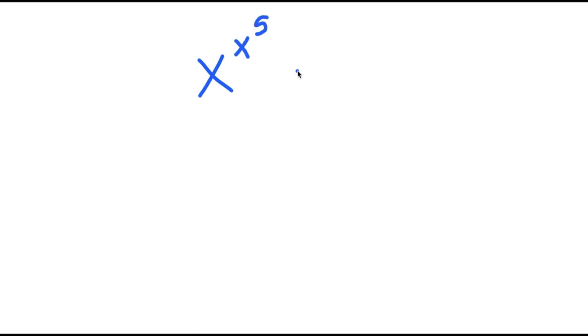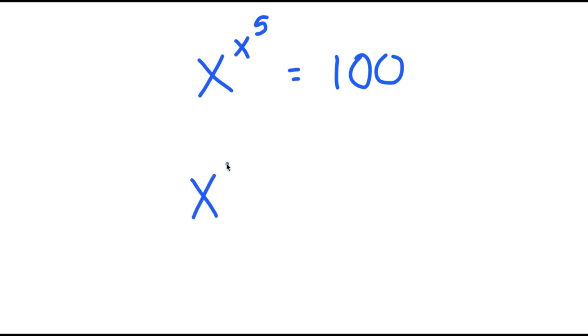So in this video, I'm going to solve the equation x to the power of x to the power of 5 is equal to 100. To solve this, I'm going to start off by taking the power of 5 on both sides.